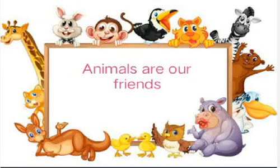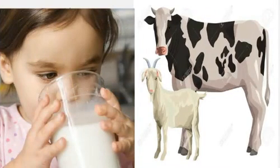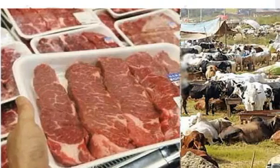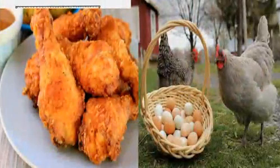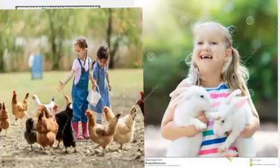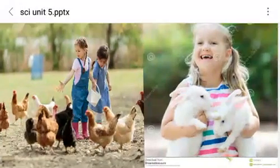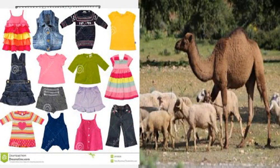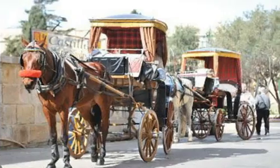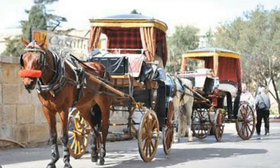Animals are our friends. How can they be our friends? Cow and goat give us milk, and we can get beef and meat from these animals. We can get eggs and chicken from hen. We can also play with our pets. We get clothes from the skin of camel and sheep. We can also use them as transport — as you can see here, horses are used for transport.